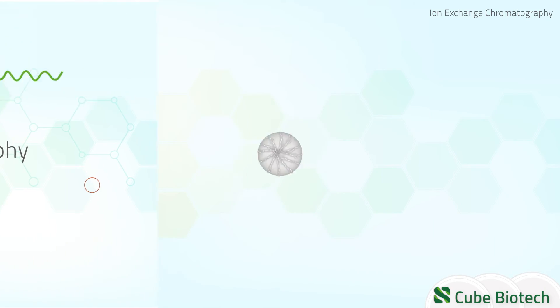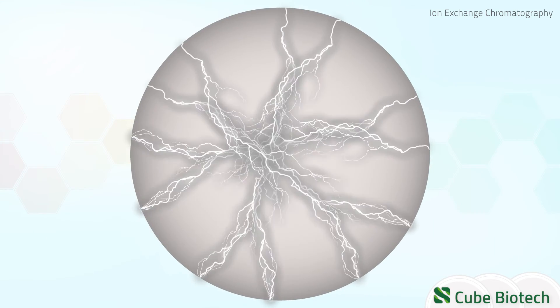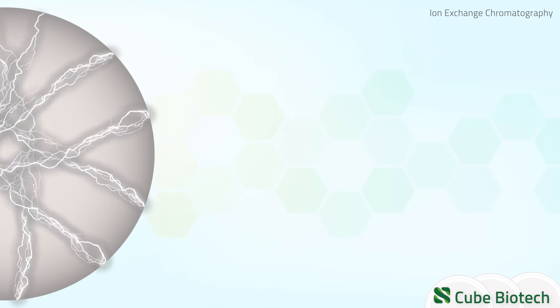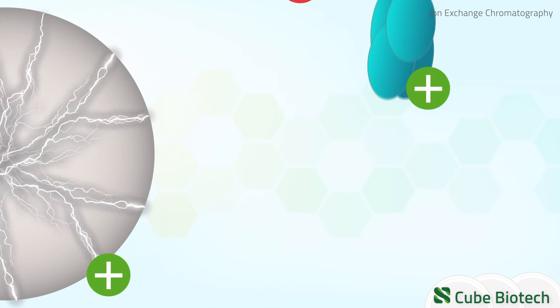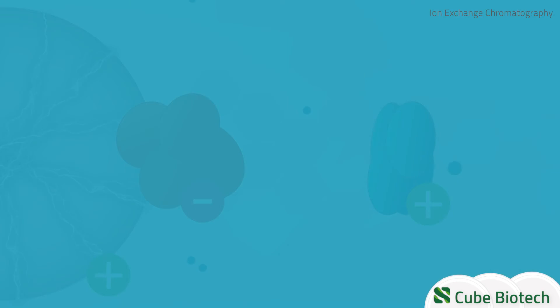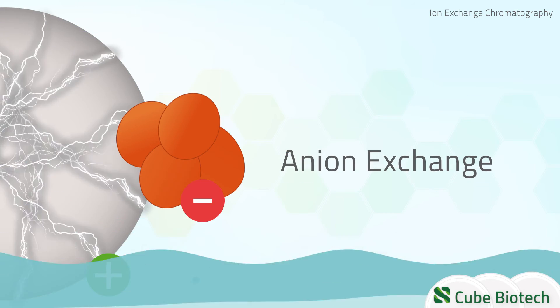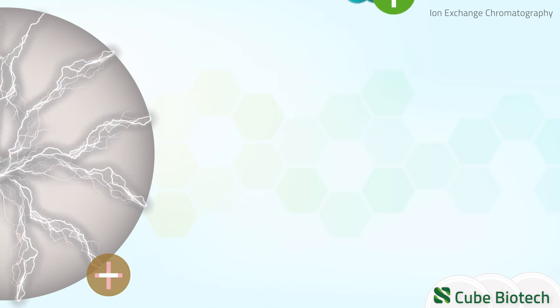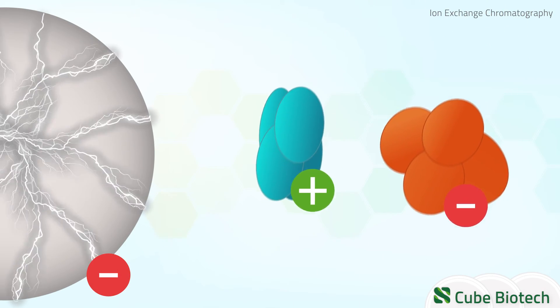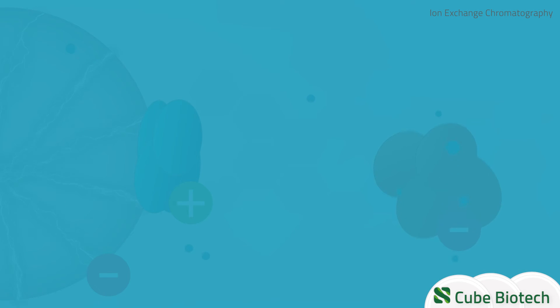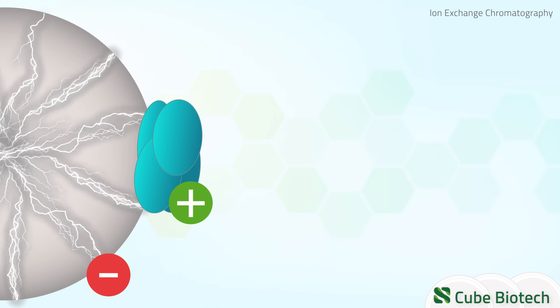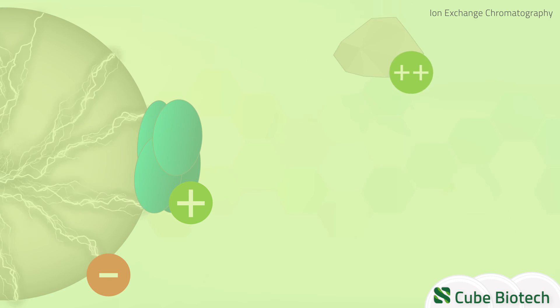Ion-exchange chromatography is based on the charge of a protein at a certain pH. In case the beads of a stationary phase are positively charged, negatively charged proteins cling to it. This is called anion-exchange. While the opposite situation, in which we have a negatively charged stationary phase binding to positively charged proteins, is called cation-exchange. After washing the column, the protein is eluted with higher charged ligands.